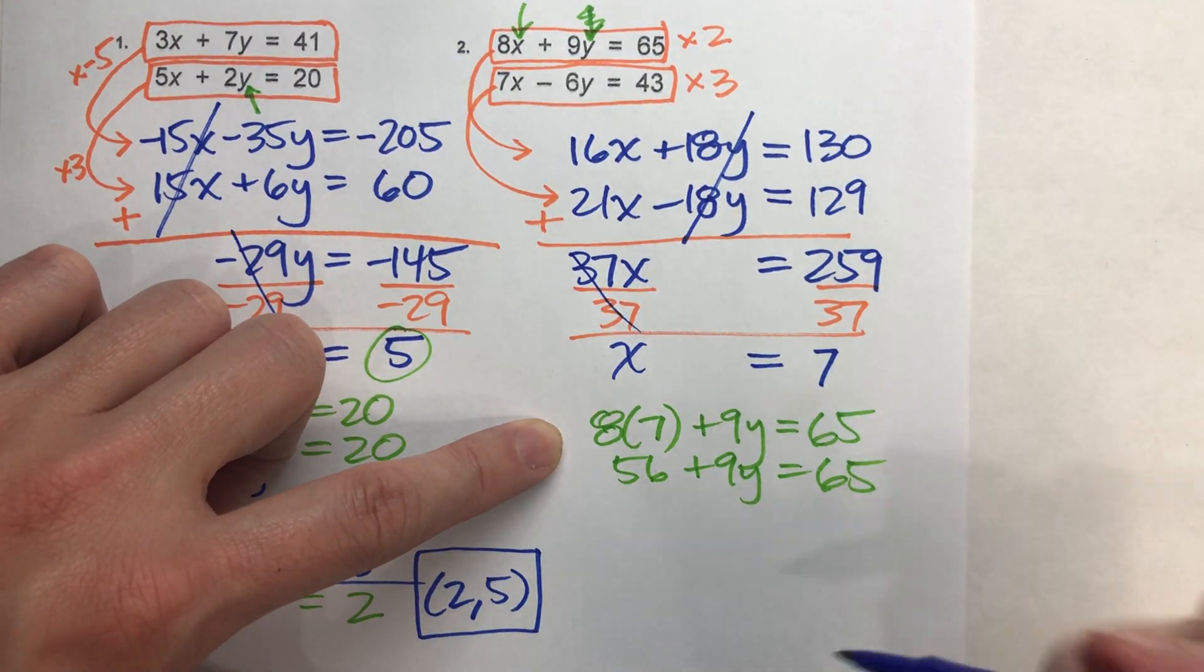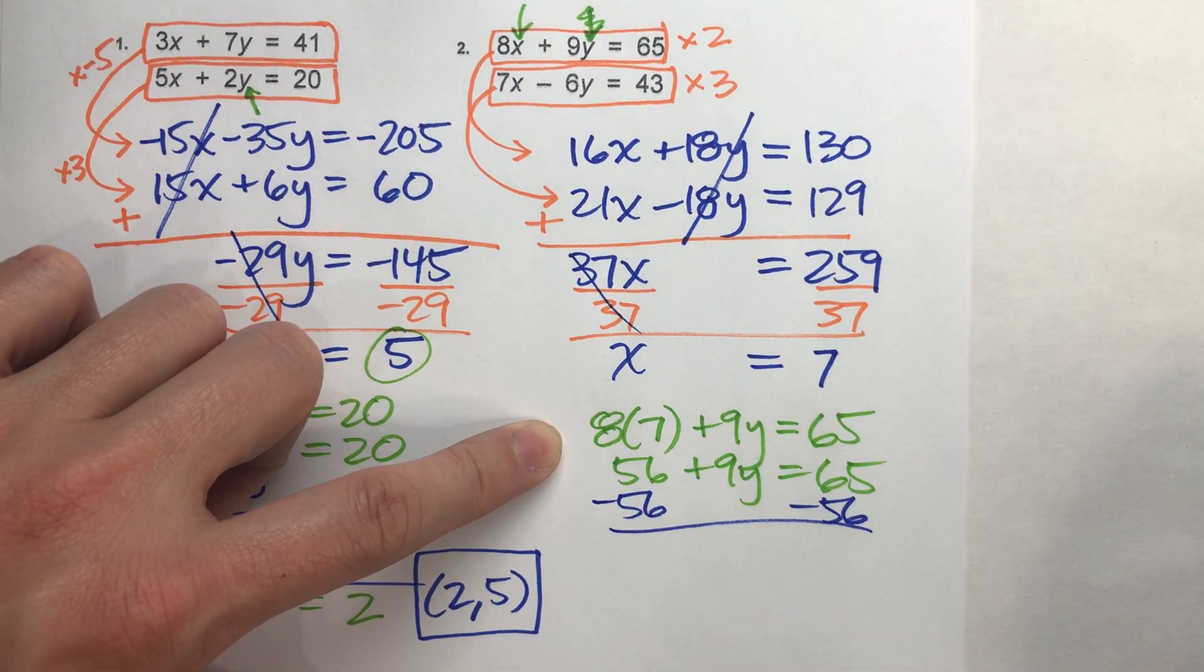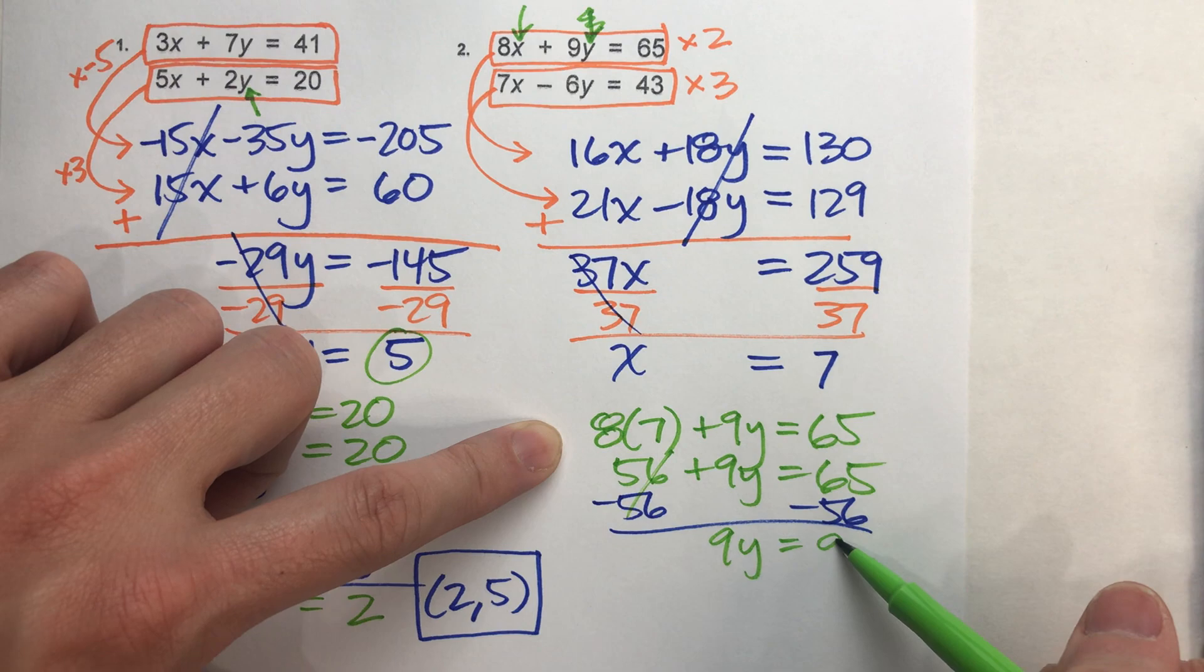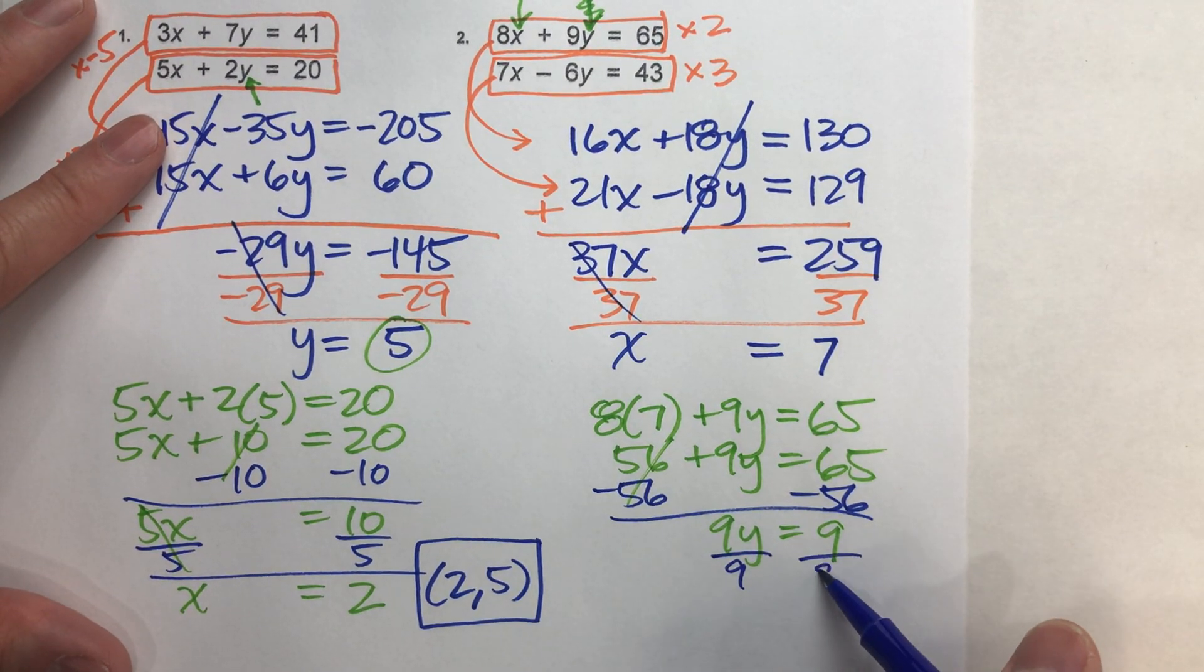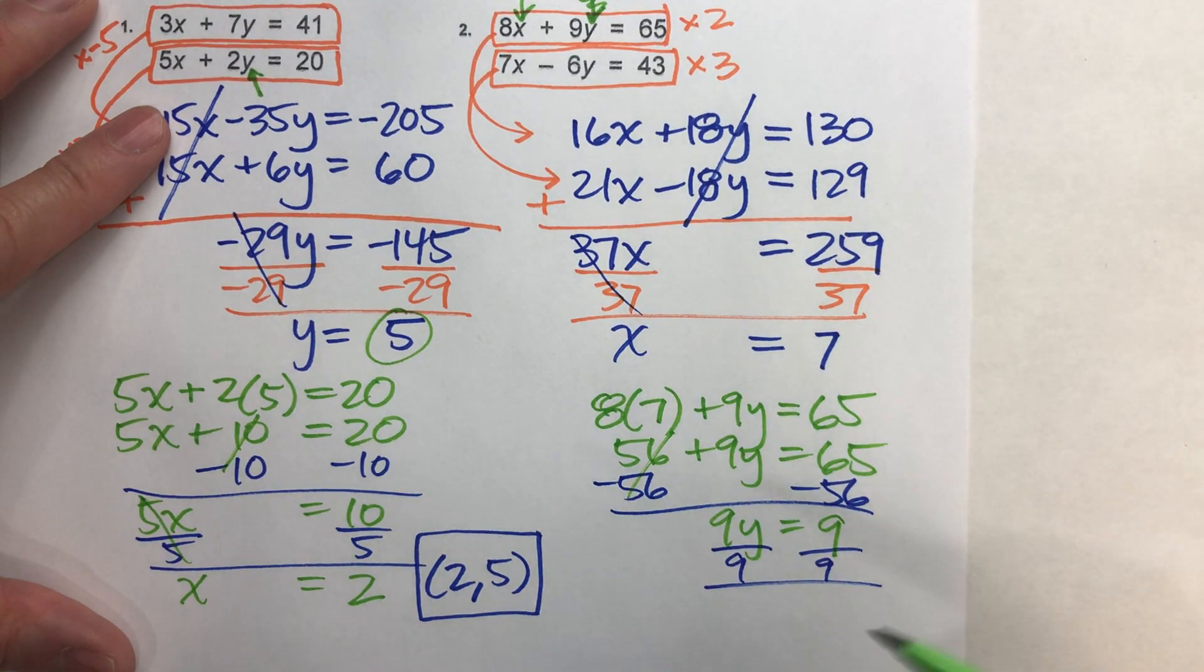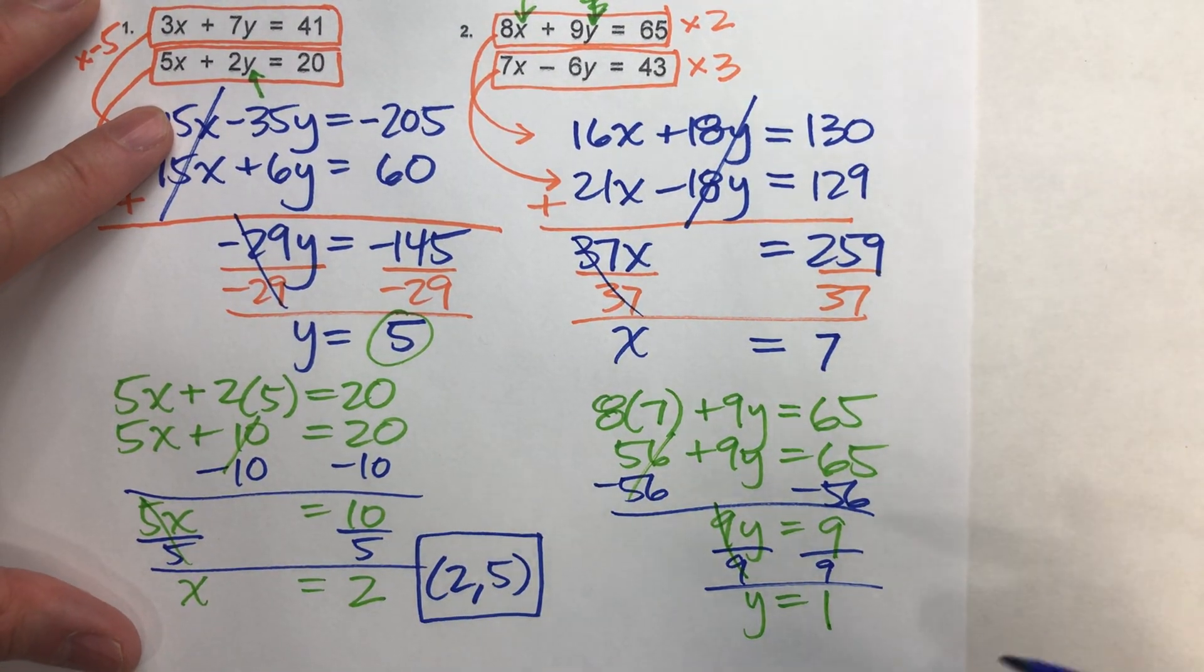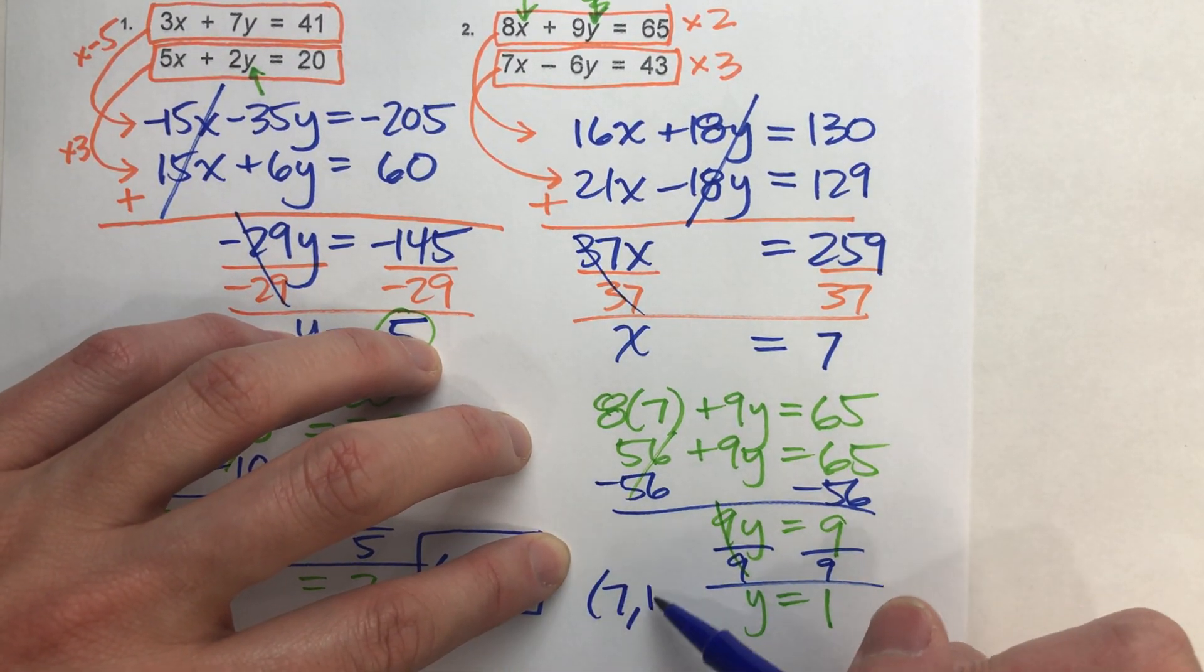To solve for y, I'm going to subtract 56 from both sides. I end up getting 9y is equal to 9. Divide both sides by 9. I end up getting y equals 1. So we just found the solution to our system. x is 7, y is 1.